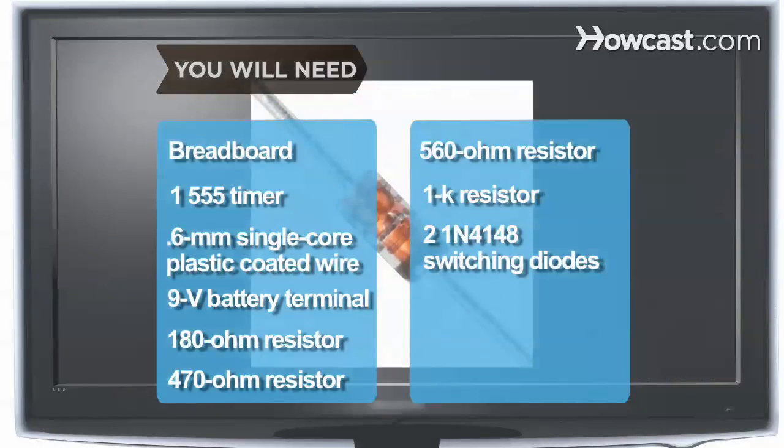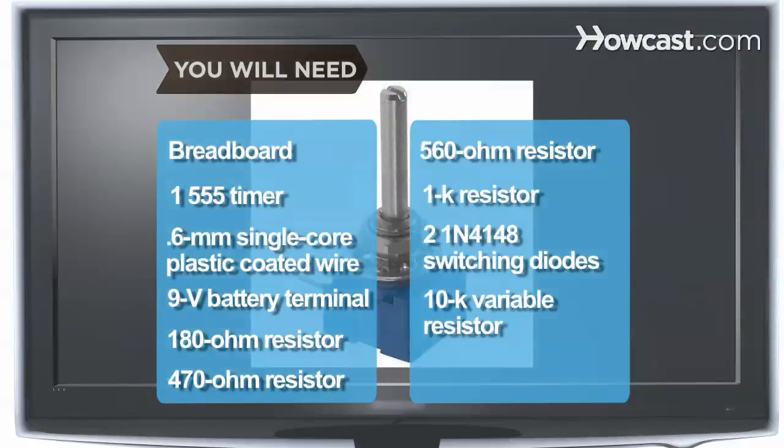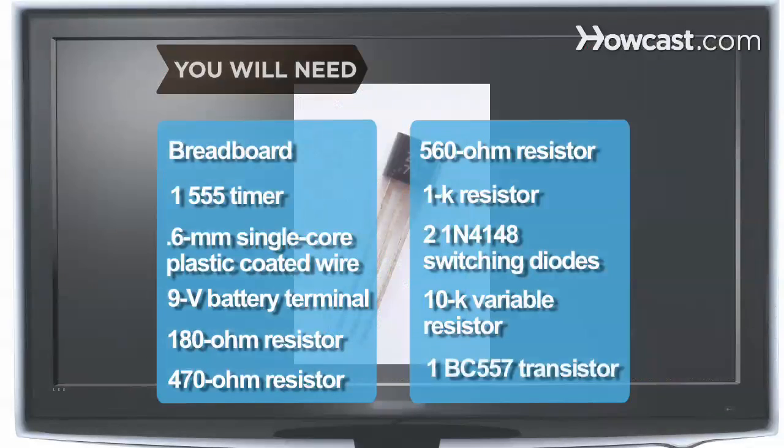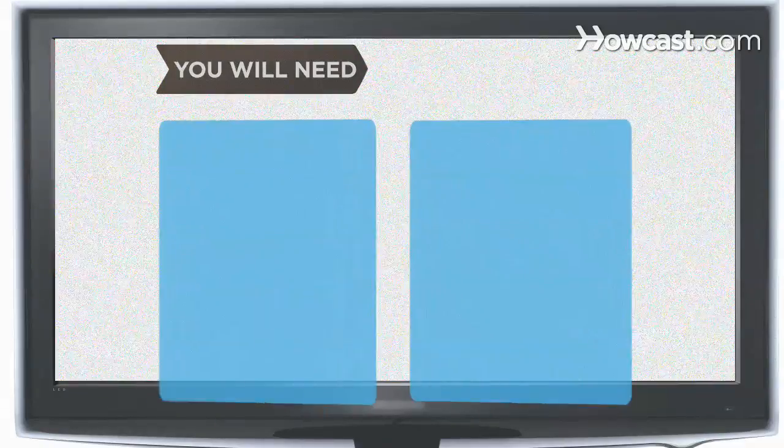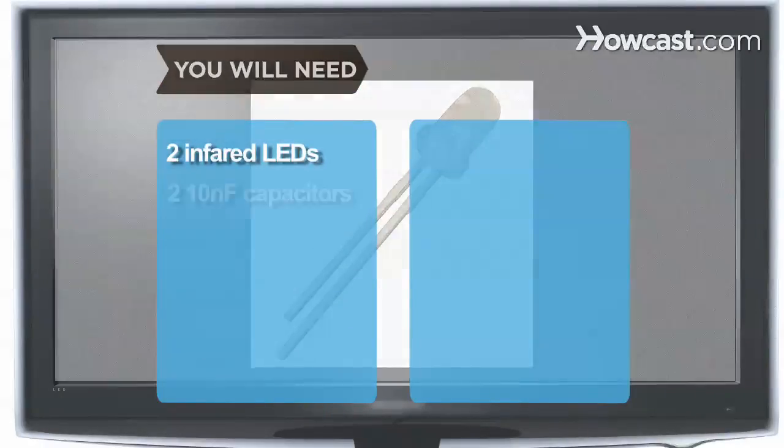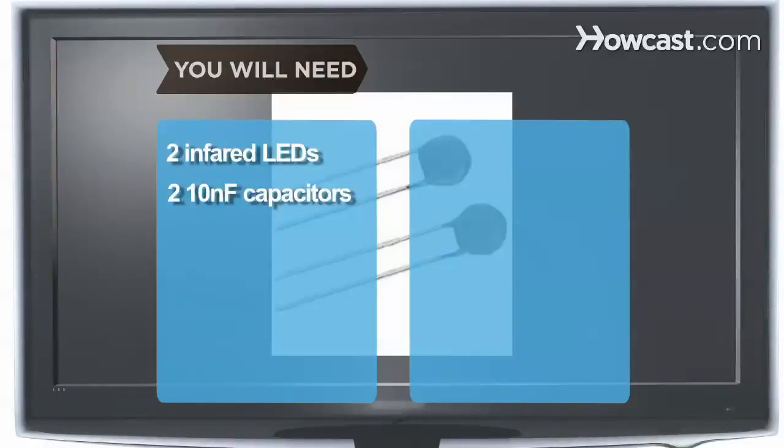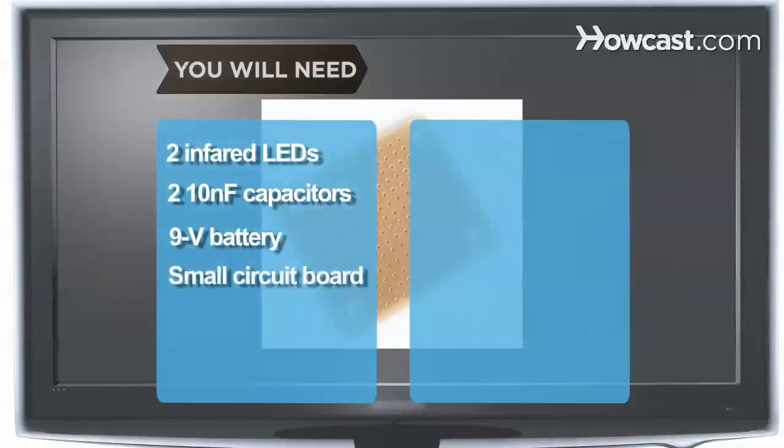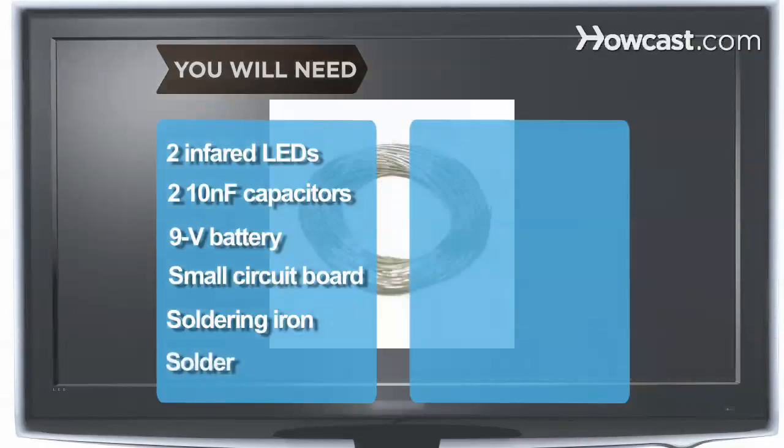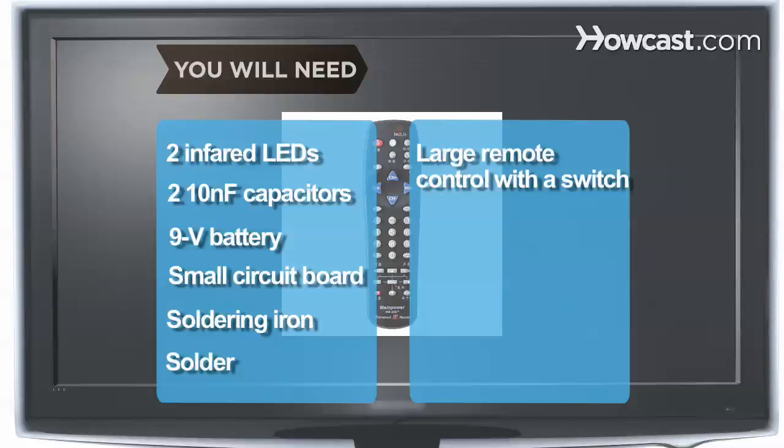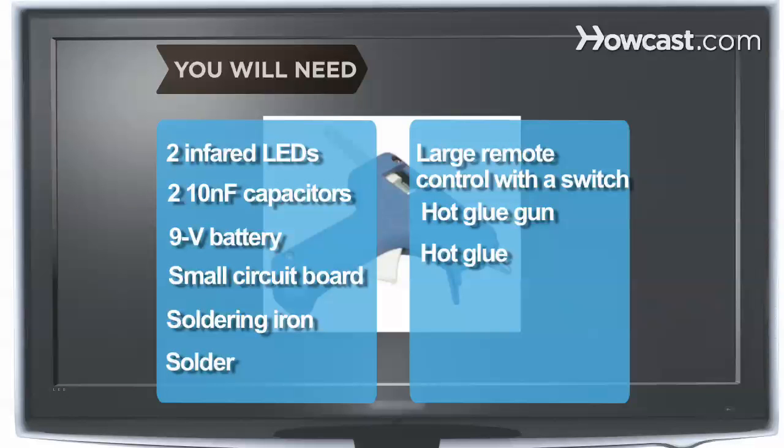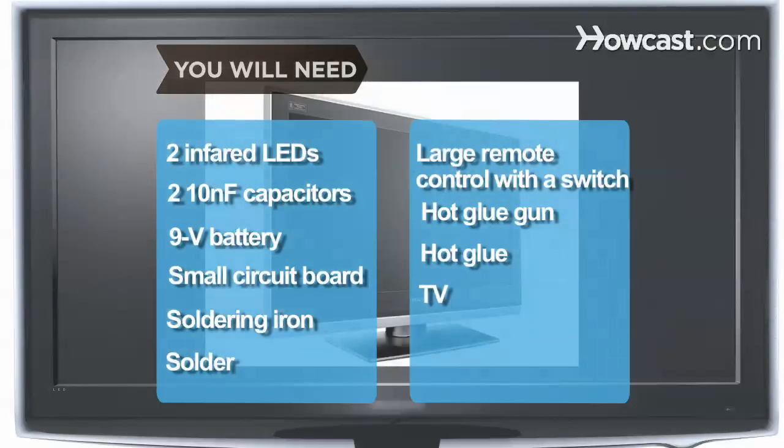Also needed: 2 1N4148 high-speed switching diodes, a 10K variable resistor, a BC557 transistor, 2 infrared LEDs, 2 10-nanofarad capacitors, a 9-volt battery, a small circuit board, a soldering iron, solder, a large remote control with a switch, a hot glue gun, hot glue, and a remote-controlled TV to jam.